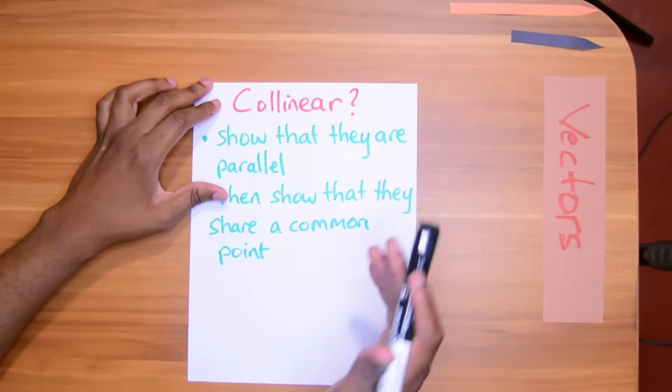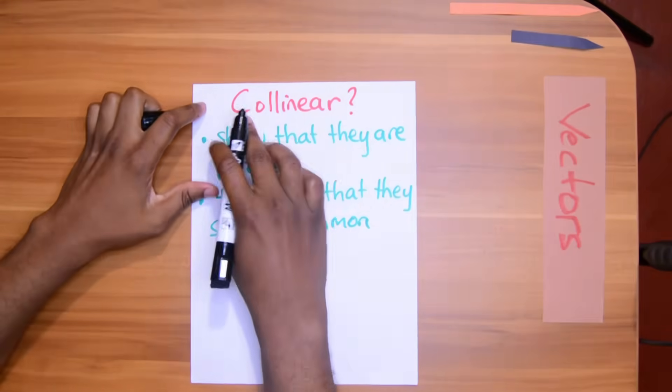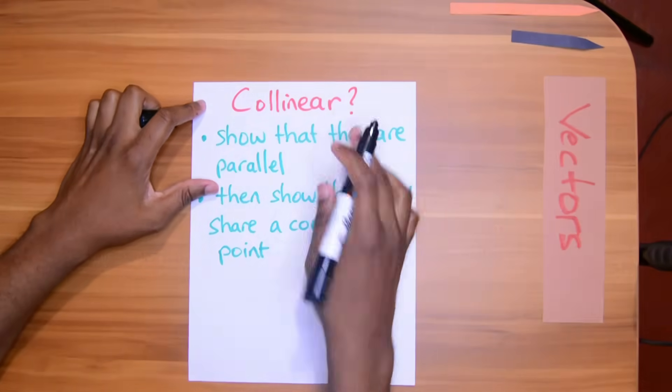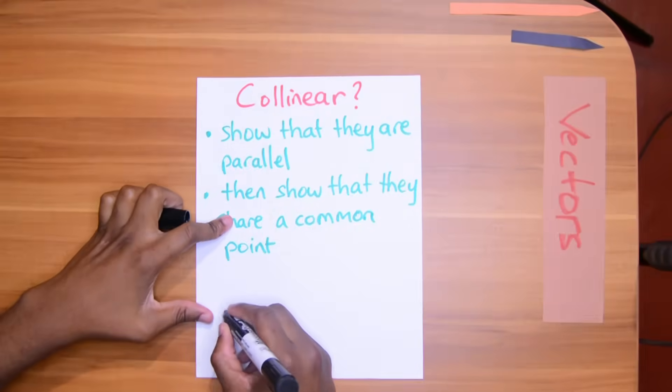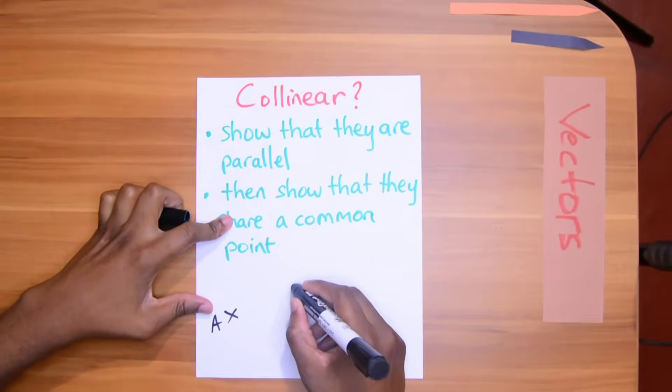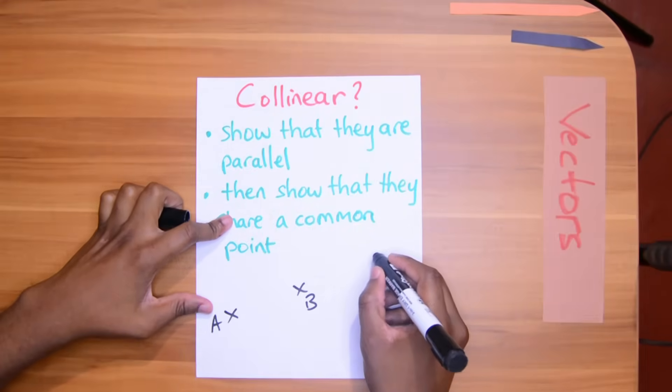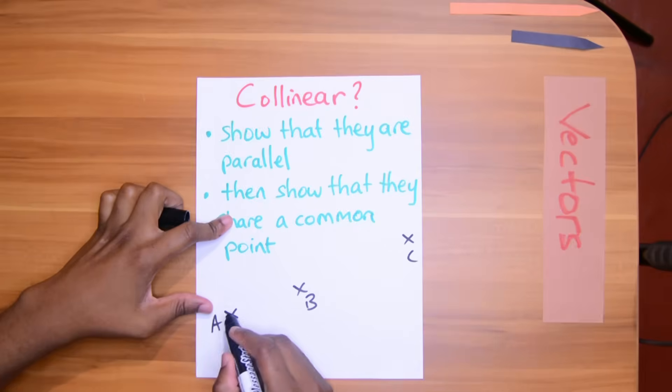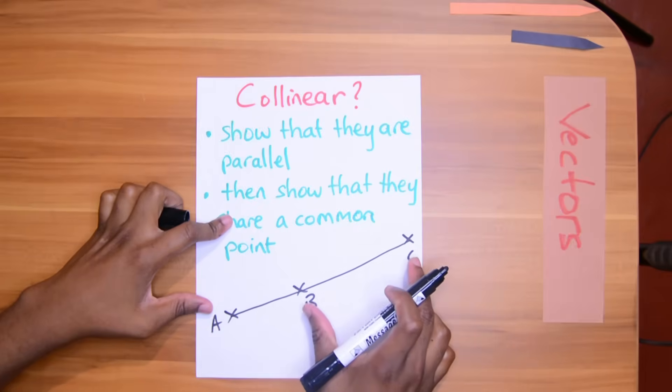The second thing that they can ask is very similar. They can ask to show that it is collinear or collinear. Collinear means they lie on the same line. For example, A to B to C. So show that AB is collinear to BC.